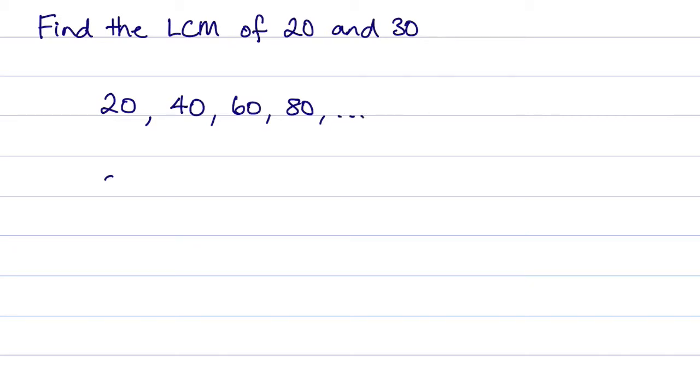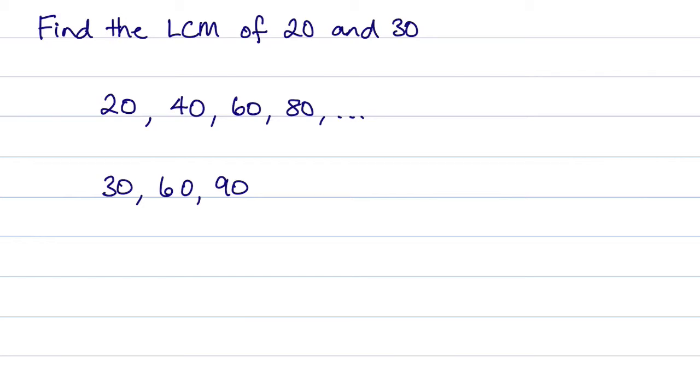And the multiples of 30, we have 30, 60, 90, etc. Now I could have stopped at 60 because I've realized that the lowest common multiple is 60. That is common to both.